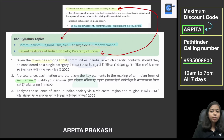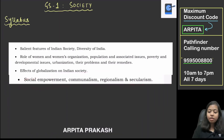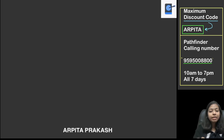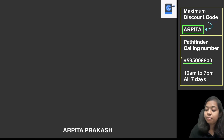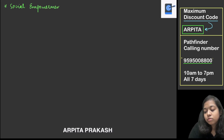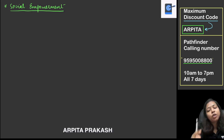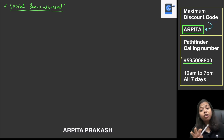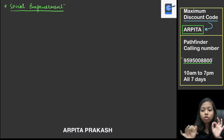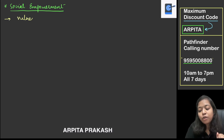Next we will do communalism, regionalism, secularism and social empowerment. These are a mix of multiple questions that will be dealt with through current affairs. Let's first understand social empowerment. The basic logic is: if we are talking about social empowerment, it means there is a group in society which needs our help — because unfortunately they are not as empowered as they should be. So first we identify which vulnerable groups need empowerment.